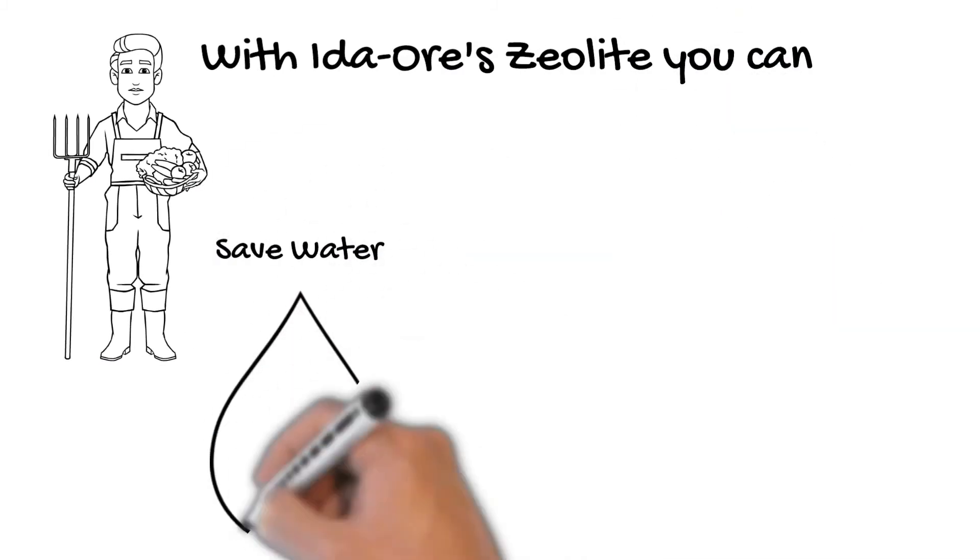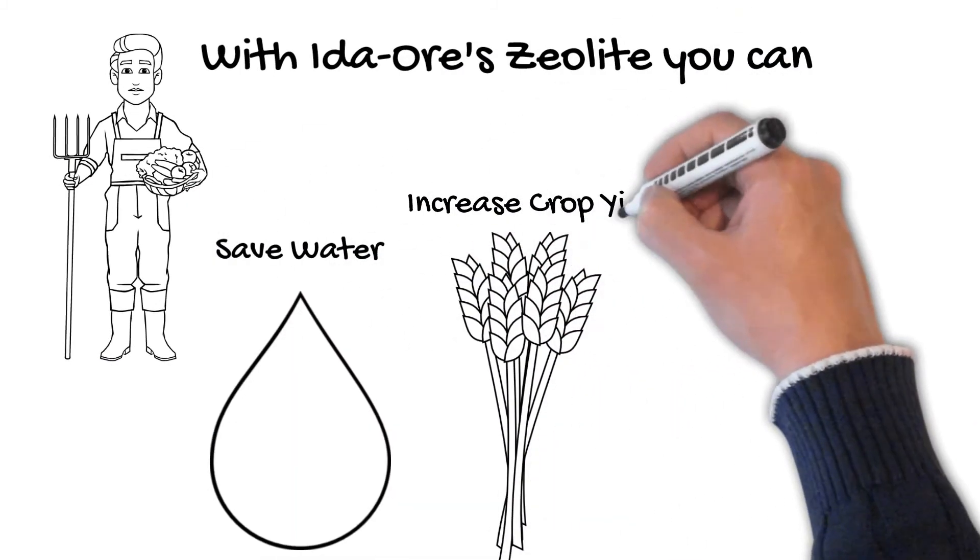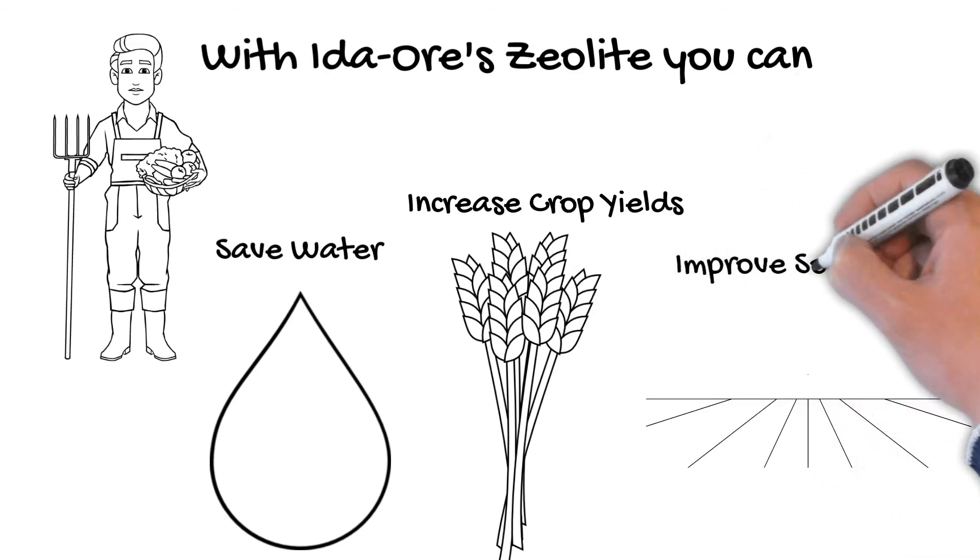Bob is thrilled that he can save water, increase his crop yields, and improve his soil quality.